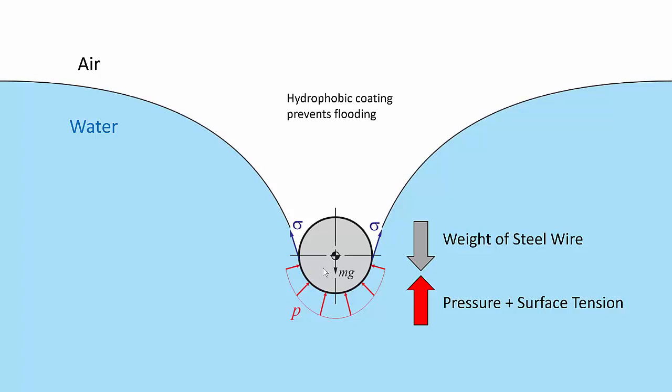Eventually the hydrostatic pressure on the bottom surface builds up to the point where you have a static equilibrium. The combination of the hydrostatic pressure on the bottom surface of the ring, the vertical component of that hydrostatic pressure, plus the vertical component of the surface tension on the inner and outer surface of the ring, balances the weight of the steel.